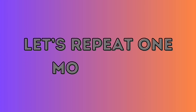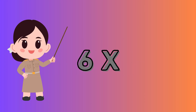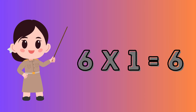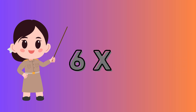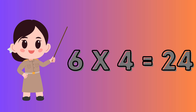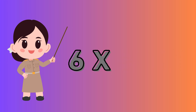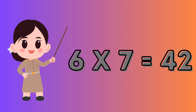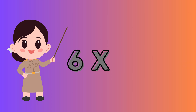Let's repeat one more time. 6 1's are 6. 6 2's are 12. 6 3's are 18. 6 4's are 24. 6 5's are 30. 6 6's are 36. 6 7's are 42. 6 8's are 48. 6 9's are 54. 6 10's are 60.